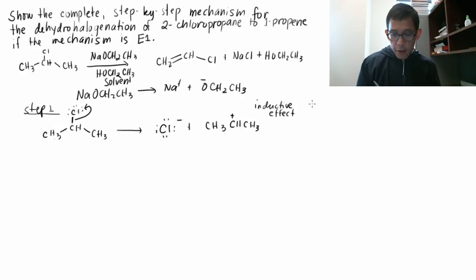Okay, so that is step 1. And again, the plus charge is stabilized by the electrons from those two CH3s. And this here is the slow step. And the slow step involves just one species. It's just the 2-chloropropane. That is why it's E1, because the slow step involves just one species.